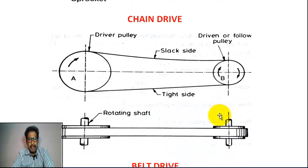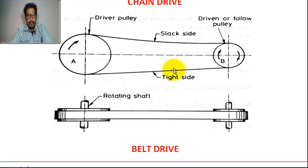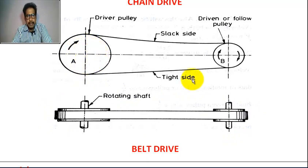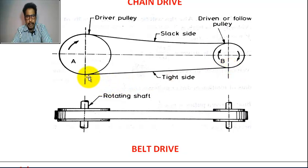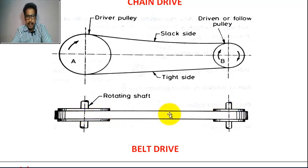This is the picture of belt drive — this is front view, this is the top view. This is the driver pulley, this is the driven pulley or follower pulley. Belt from driver pulley to follower pulley is called slack side; belt from follower pulley to driver pulley is called tight side. This is the driver shaft, this is the driven shaft. The two shafts are parallel and in horizontal position.